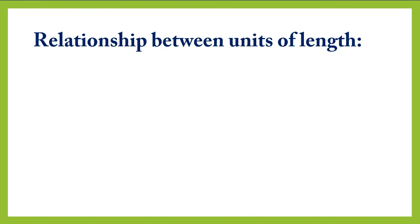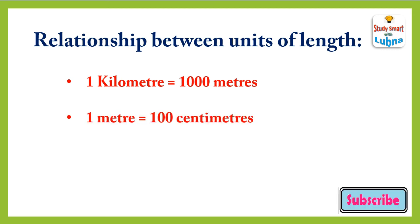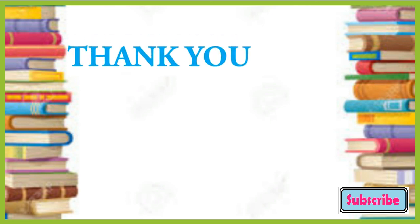Now we are going to look at the relationship between units of length. 1 kilometer is equal to 1000 meters. 1 meter is equal to 100 centimeters. 1 centimeter is equal to 10 millimeters. Thank you.